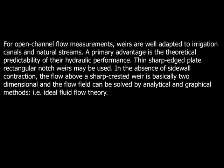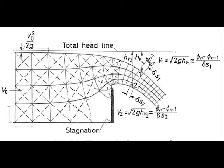Thin, sharp-edged plate or rectangular notch weirs may be used. In absence of sidewall contraction, the flow above a sharp-crested weir is basically two-dimensional, and the flow field may be solved by analytical and graphical methods: ideal flow theory.